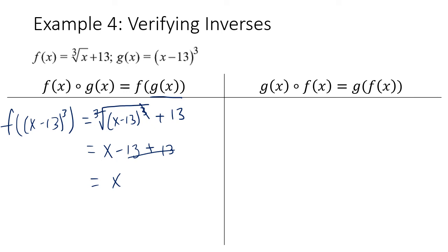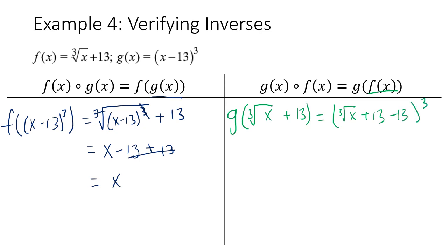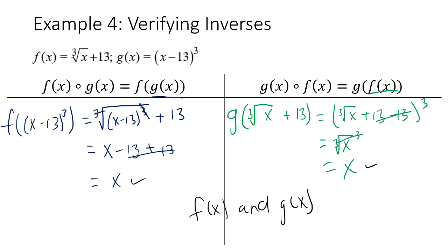Now for g ∘ f(x): substitute f(x) = the cube root of (x + 13) into g. So g(f(x)) = (the cube root of (x + 13) − 13)³. The 13 − 13 cancels to zero, leaving (the cube root of x)³. Cubing a cube root cancels out, giving us x. Since both compositions equal x, f(x) and g(x) are inverses of each other.